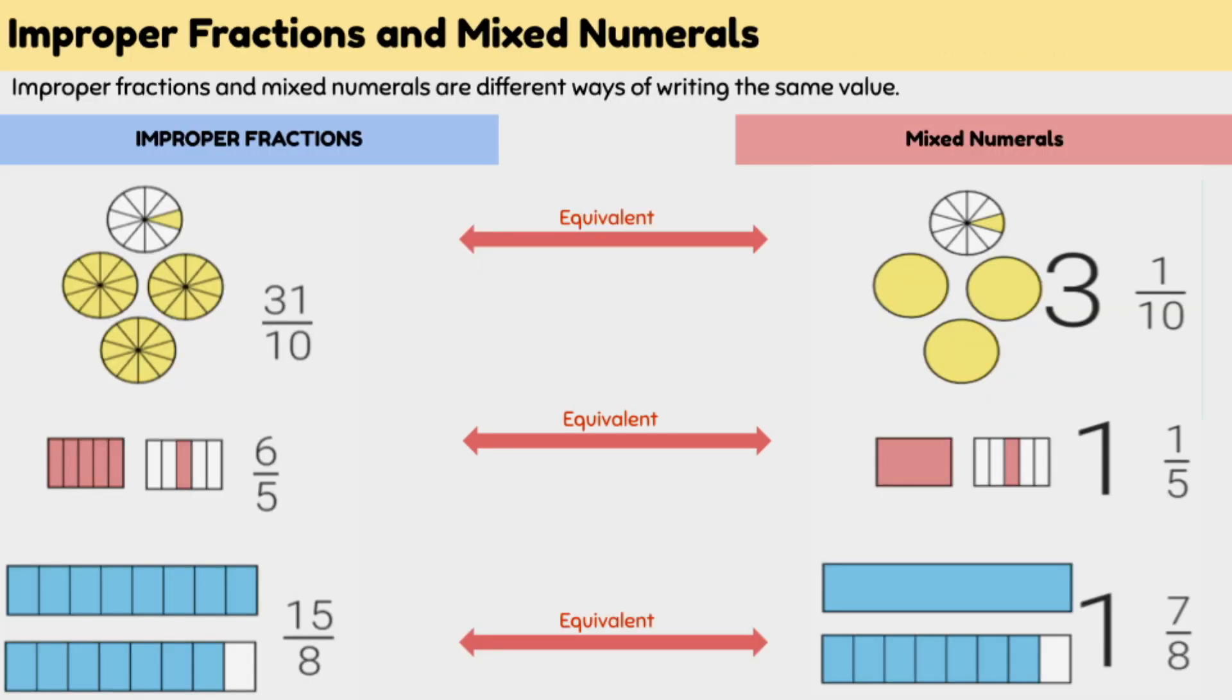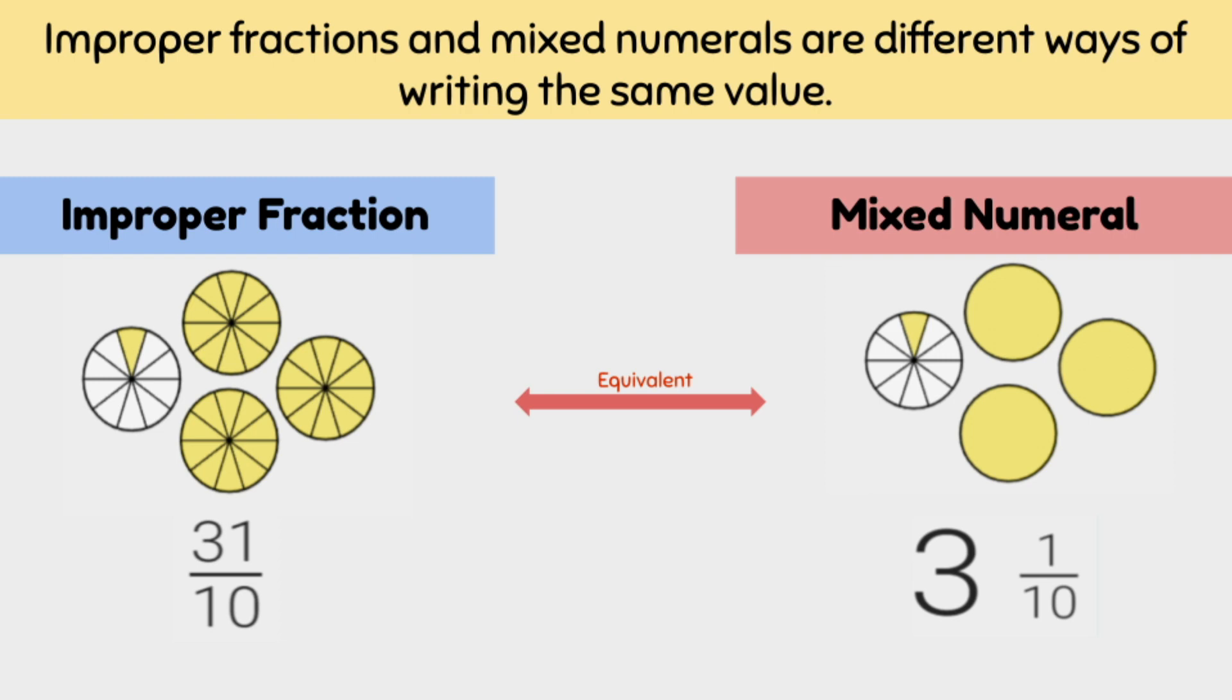Here are some more examples of improper fractions and their equivalent mixed numerals. The first picture here shows 31 shaded pieces with each whole cut into 10. We can write our improper fraction as 31 over 10, or we can write it as a mixed numeral and say we have three wholes and one piece out of 10.